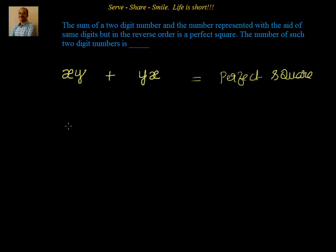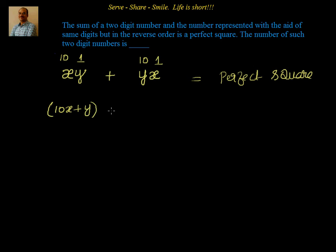Now first of all, what's the value of the number having digits xy? Remember, x is in the tens position and y is in the units position. In yx, y is in the tens position and x is in the units position. So the value of number xy is 10x plus y, because x is in the tens position and y is in the ones. Similarly, the value of yx is 10y plus x.